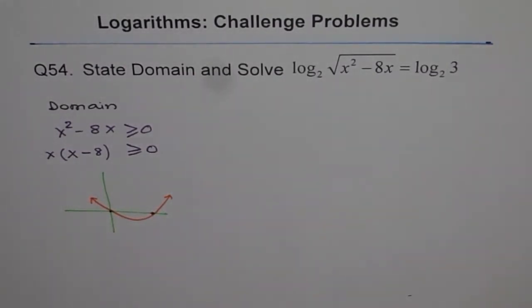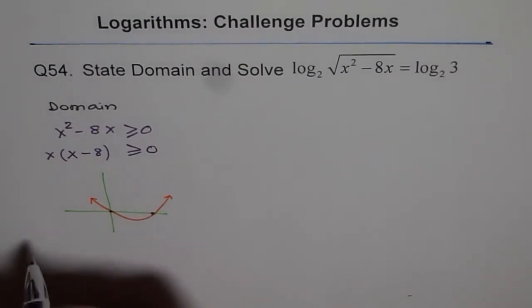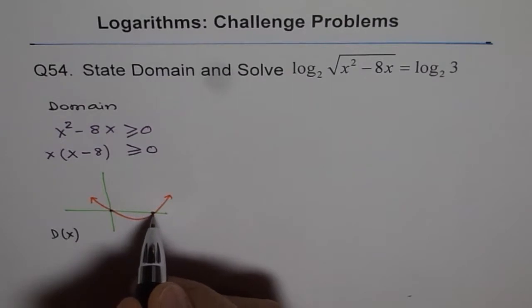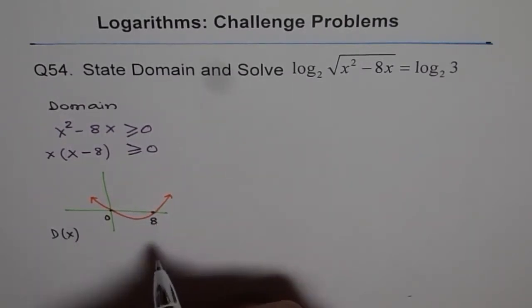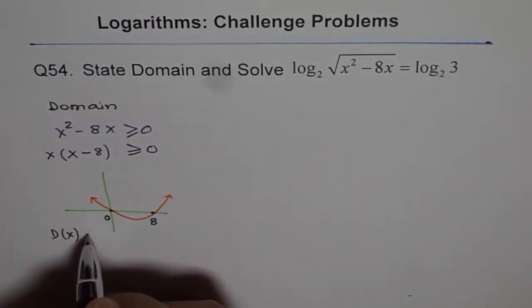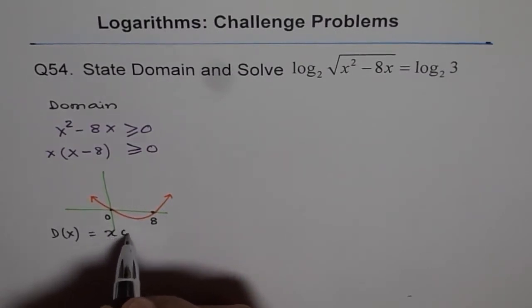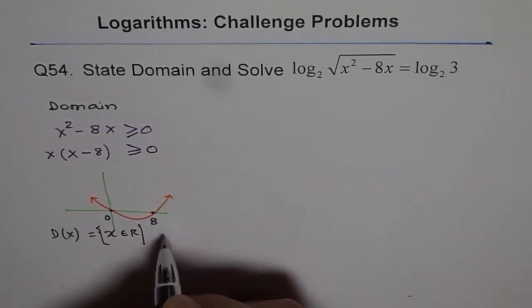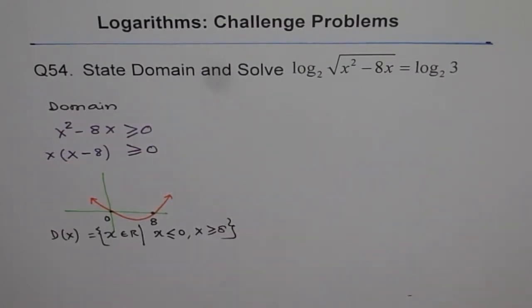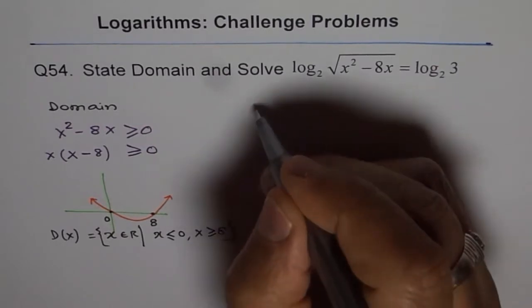And from here, we can see that the domain of the function is anything on the left side of this and right side of that. This is 0 and that is 8. So, the domain of this function is that x belongs to real numbers so that x is either less than or equal to 0 or x is greater than or equal to 8. So, that is the domain of our function. So, we have done the first part of finding the domain.